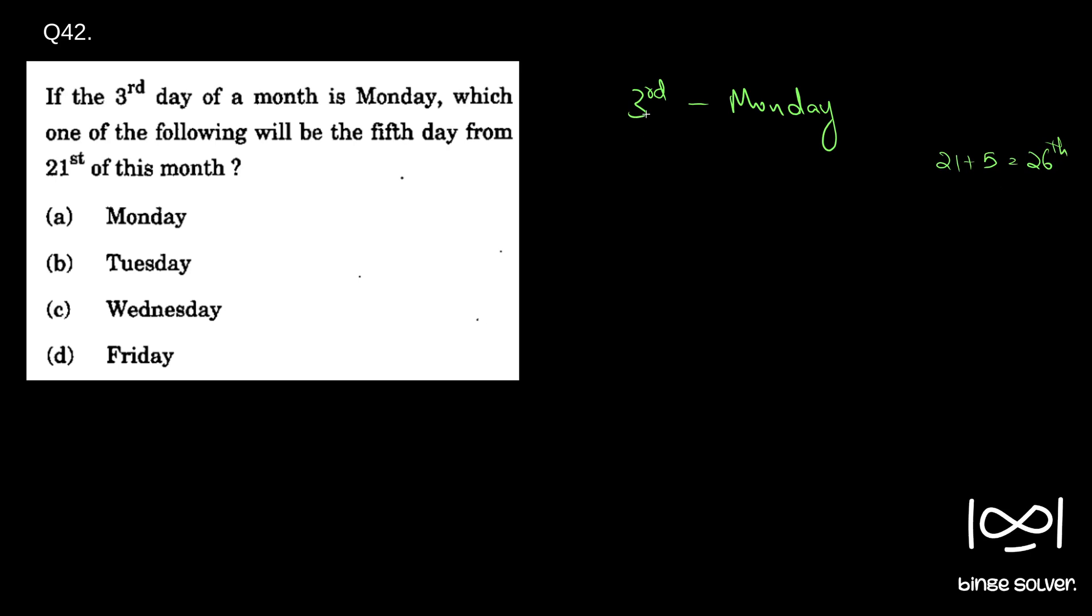Plus 7, so 3 plus 7 will be another Monday. 10th day will be a Monday. Similarly, 3 plus 14 will be a Monday. So 10th day will be a Monday, and adding 7 to it, 17th day will be a Monday.